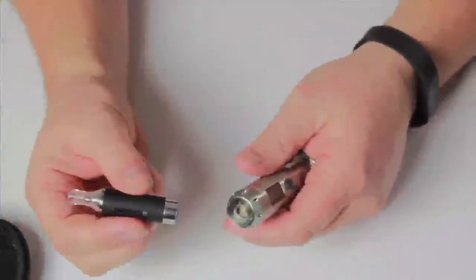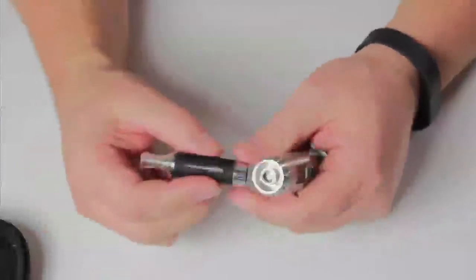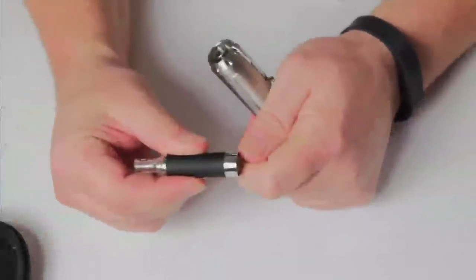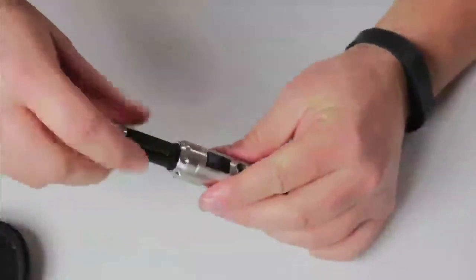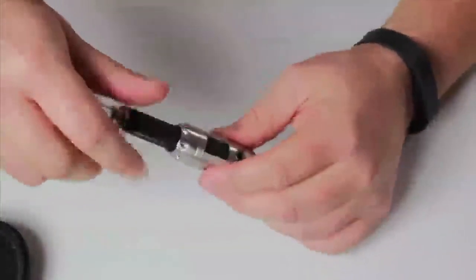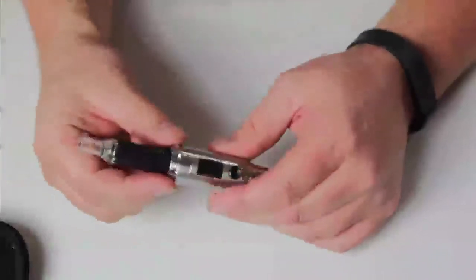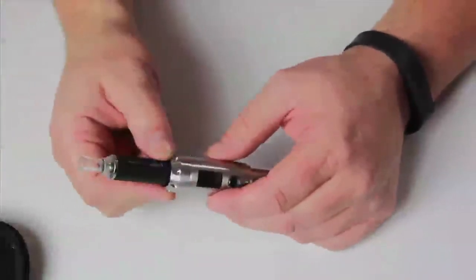Again, when you're screwing your clearomizer on, it's always a good idea to make sure your clearomizer, your base is really tight, and thread that on. As soon as you feel it make contact, you'll feel a little resistance, only go a tiny bit past that.